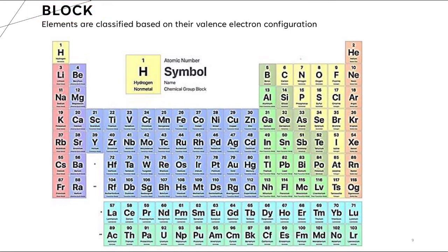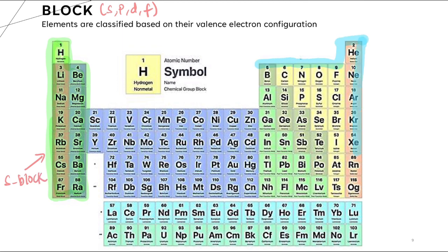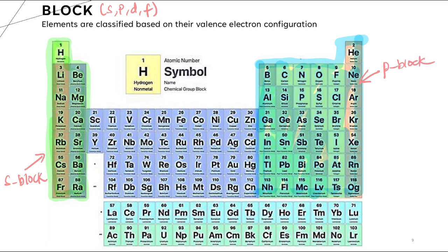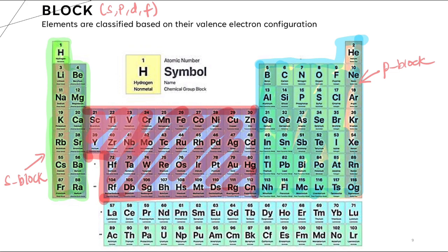Now let's take a look at the block. There is a total of 4 blocks in the periodic table: S, P, D, and F block. The S block is highlighted in green. The P block is highlighted in blue. The D block is highlighted in pink. And finally, the F block is highlighted in green as well.